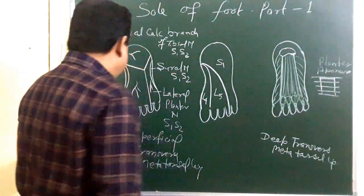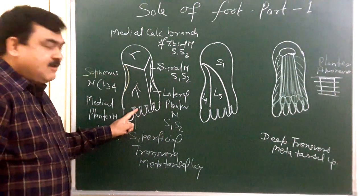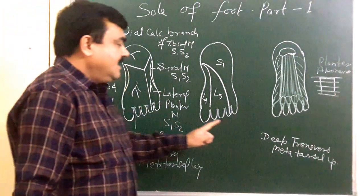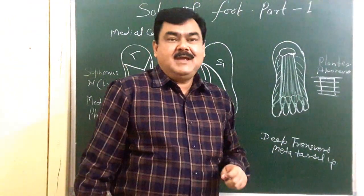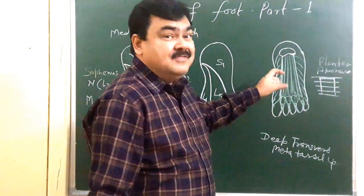Here is a superficial transverse metatarsal ligament, which is formed by superficial fascia. Here is a deep transverse metatarsal ligament, which is formed by deep fascia. And deep fascia has another modification.